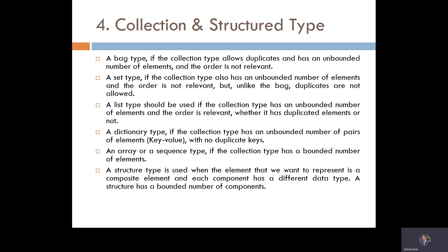For collections and structure types, we use a dictionary for collecting data. Whenever there is a kind of attribute or data type needed, we can derive it from the dictionary. A bag type is used if the collection type allows duplicates and has an unbounded number of elements where order is not relevant. We use different kinds of data structures — stack, queue, linked list — and allocate a particular key value so there is no duplicacy in the database and we can efficiently retrieve the data.